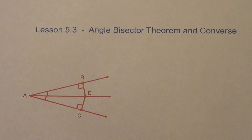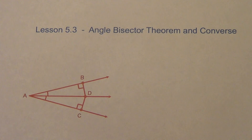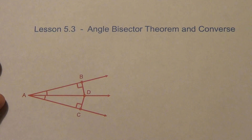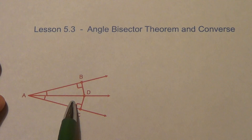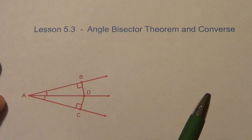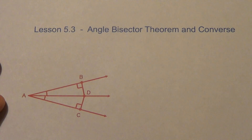We are on Lesson 5.3. We're going to talk about angle bisector theorem and its converse. We just did, back in Lesson 5.2, perpendicular bisector theorem and its converse. So kind of the same idea, but obviously we're dealing with angles instead of segments. We're going to prove these theorems work by doing triangles congruent and CPCTC. The other ones are eight steps long; these ones are actually a little bit longer — they're both 10 steps long.